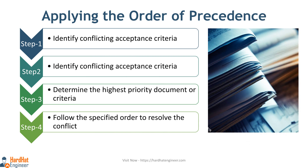How to apply the order of precedence? It is a four-step process. Step 1: Identify conflicting acceptance criteria. Recognize that there are conflicting criteria or requirements from different sources or documents. This could include contractual agreements, technical specifications, industry standards, or any other relevant sources that govern the inspection process.